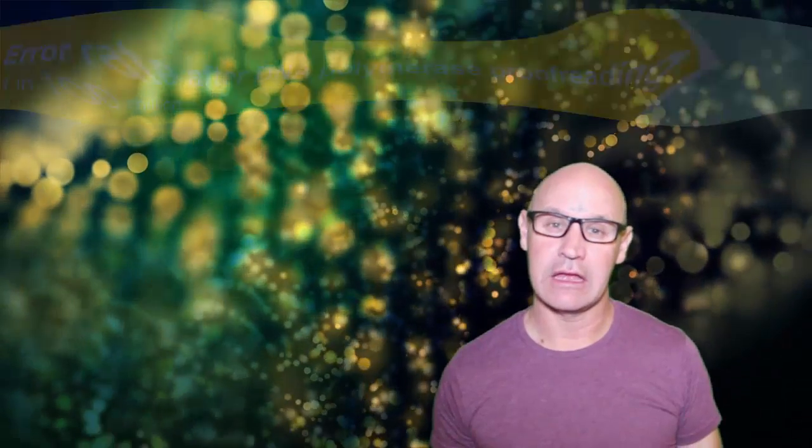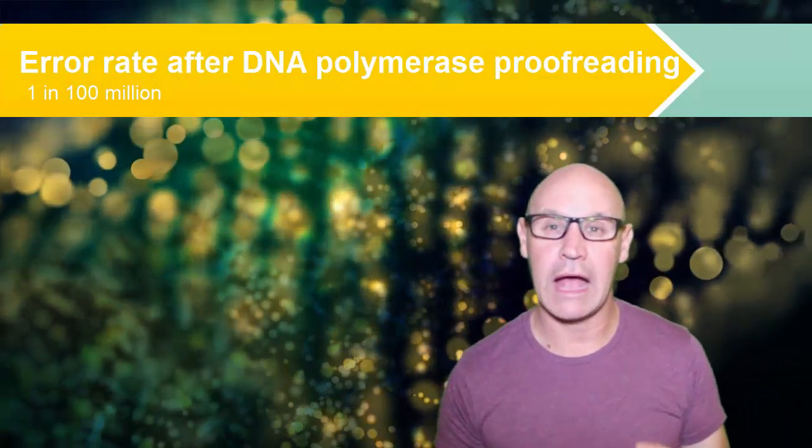So the DNA polymerase proofreading function reduces the error rate to around about 1 in 100 million. Now, we don't have the same high quality proofreading mechanisms with mRNA, because with mRNA it just is involved in making the one protein. It's not going to be perpetuated in every new cell after that.